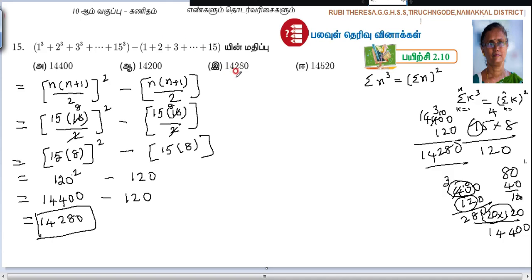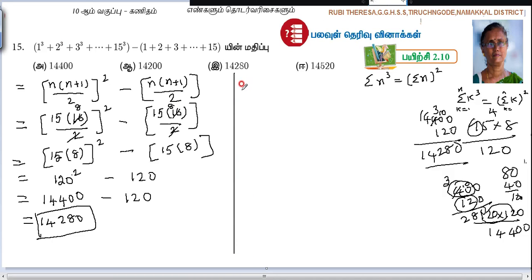This is the alternate method. What are you doing? This is one number. Why do you say 15? What do you say?